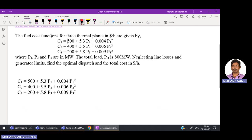First, we will understand the terminologies used here. We have three letters C1, C2, C3. C indicates cost and capital P indicates the power generated, real power generated in megawatts.